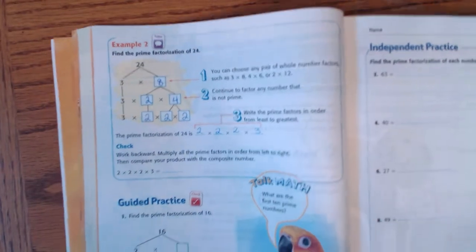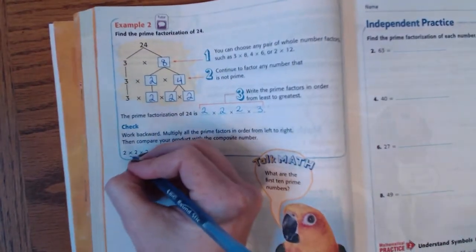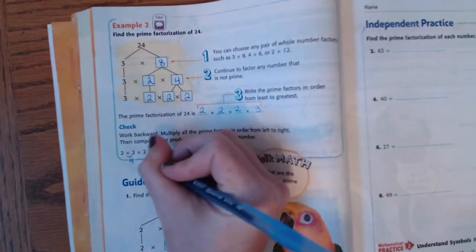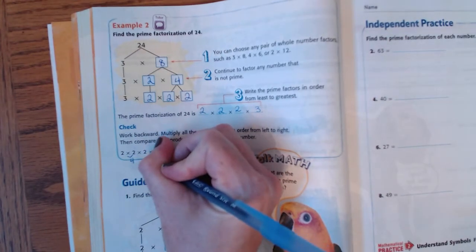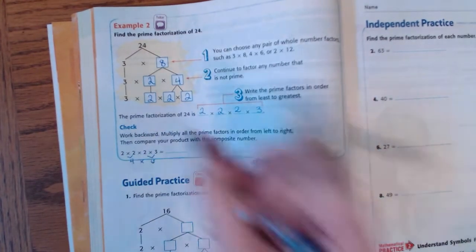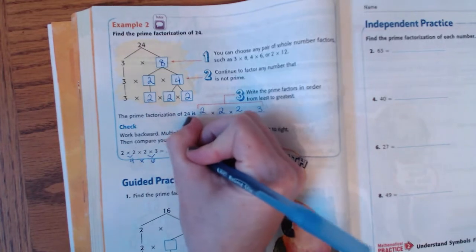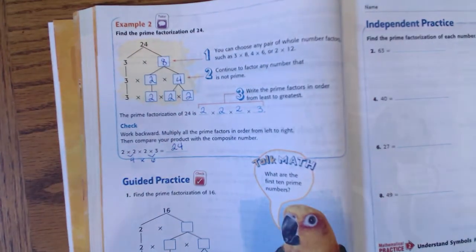And to check our numbers, 2 times 2 is 4. 2 times 3 is 6. And 4 times 6 is 24. All right, I hope this helps. Thank you.